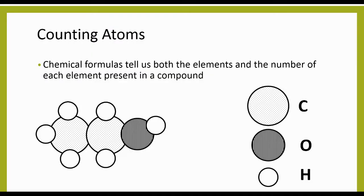Chemical formulas tell us both the elements that we have present in the compound and the number of each element that we have present. There are different ways that we can represent this — one way is using formulas, and the other way is using pictures.